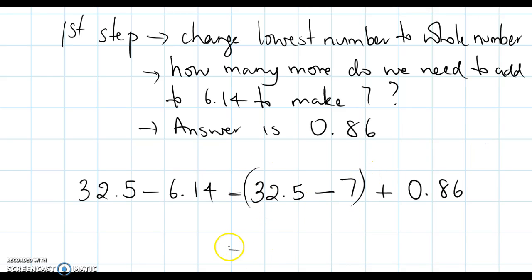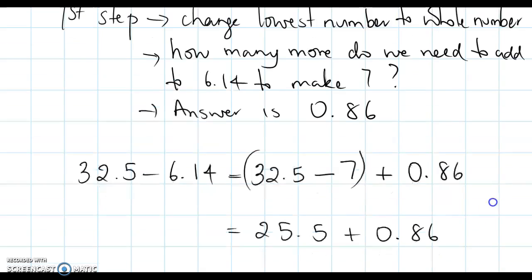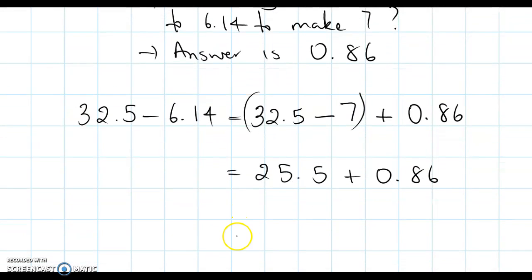Bracket those. 32.5 take away 7 is 25.5 plus 0.86. Sorry. 25.5 plus 0.86 is, using my knowledge of place value, that would be 26.36.